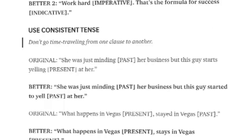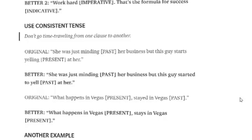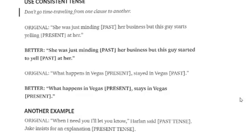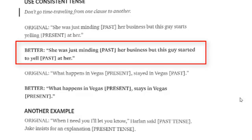Use consistent tense. Don't go time traveling from one clause to another. For example: 'She was just minding her business' — past tense — 'but this guy starts yelling at her' — present tense. Better: 'She was just minding her business, but this guy started to yell at her.' Both are in past tense.